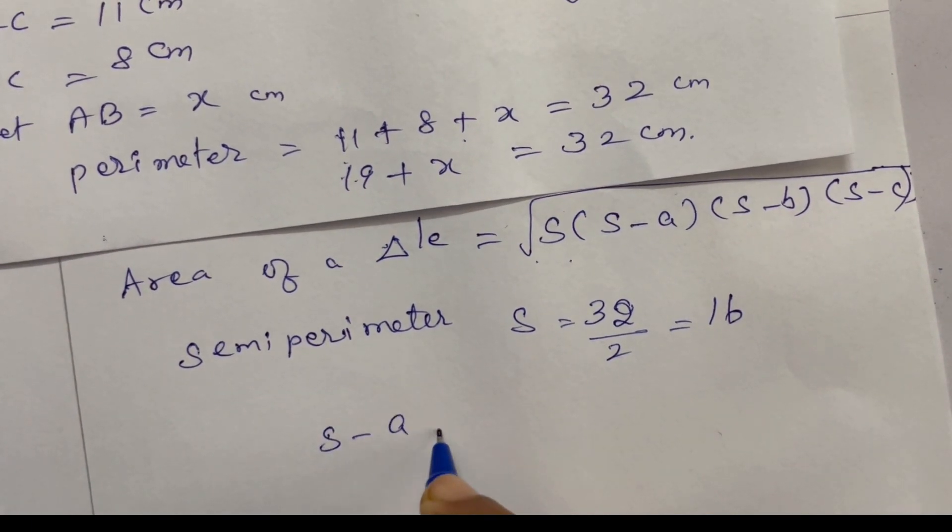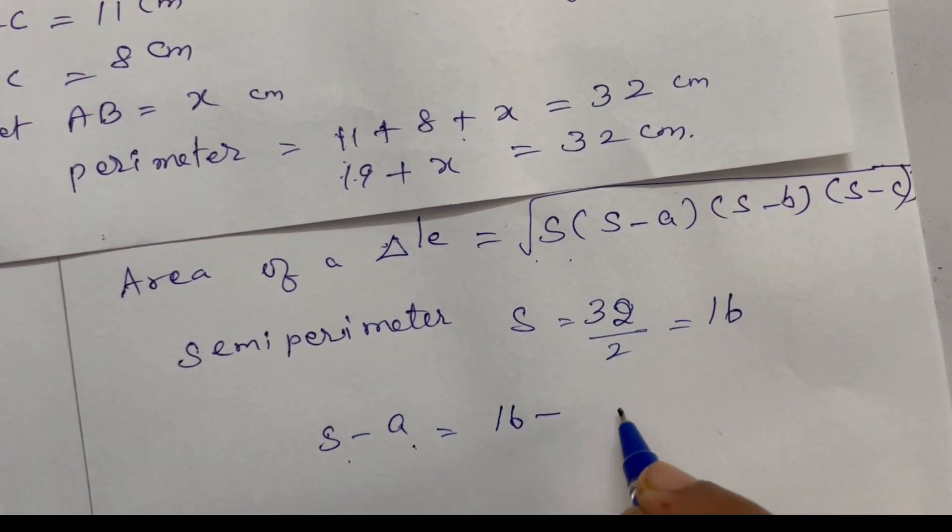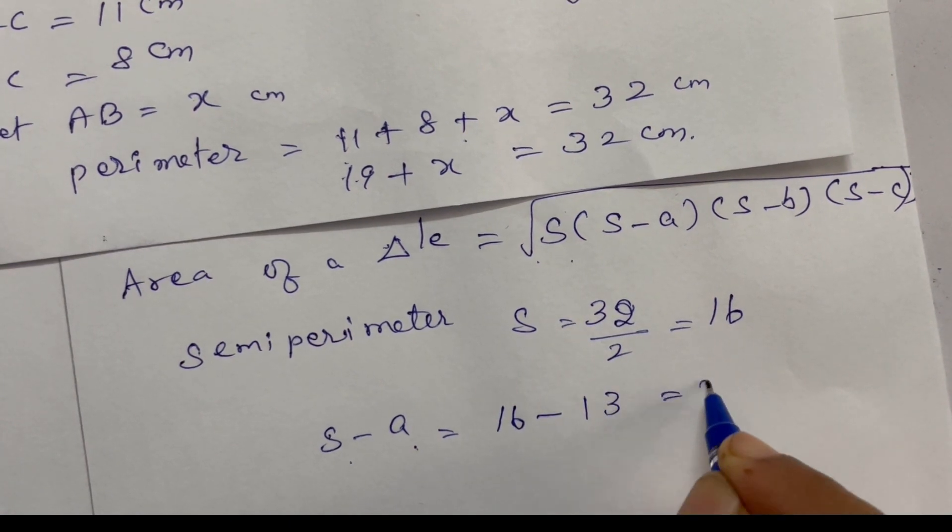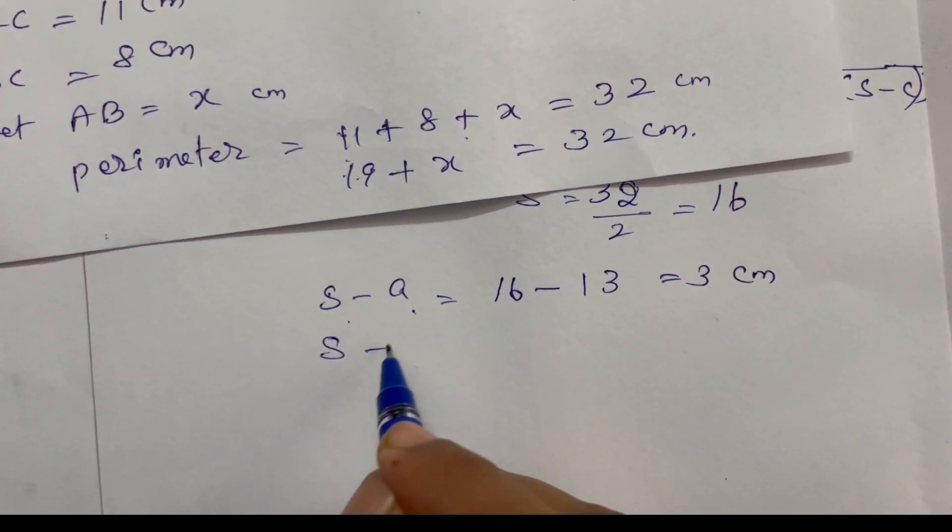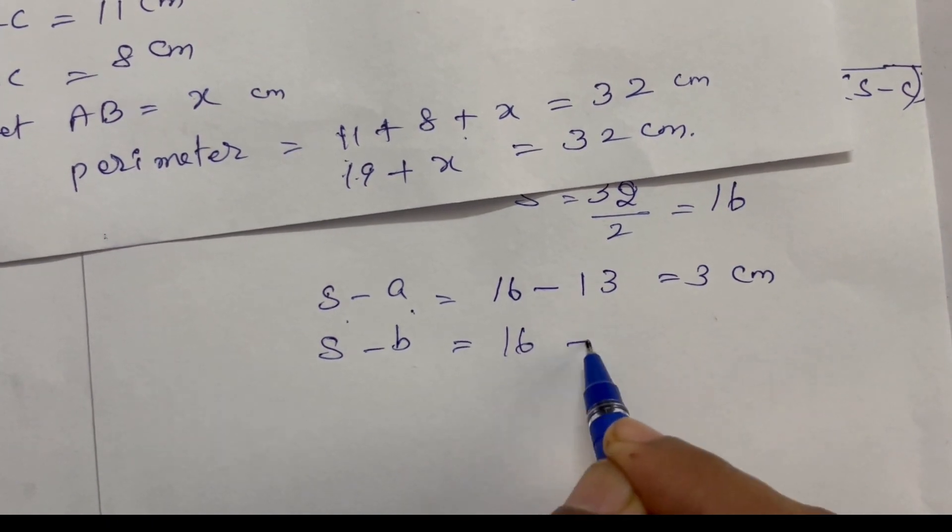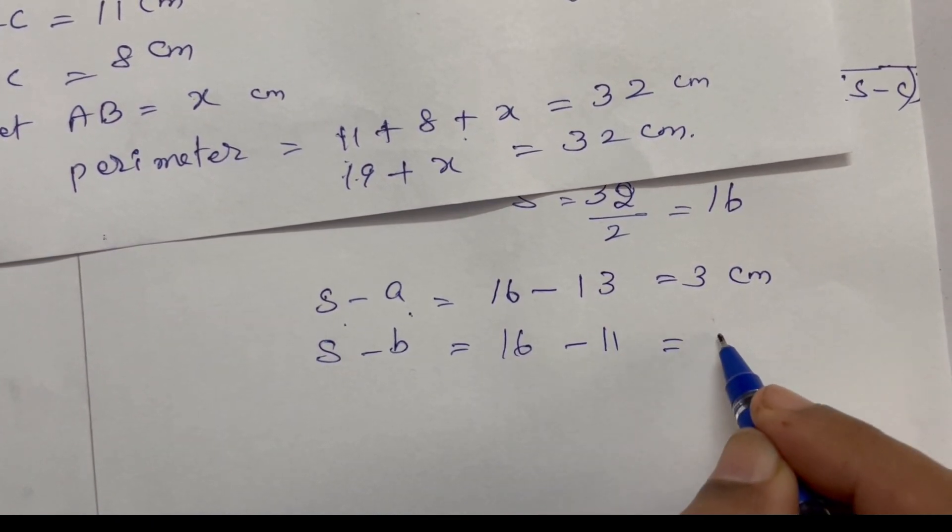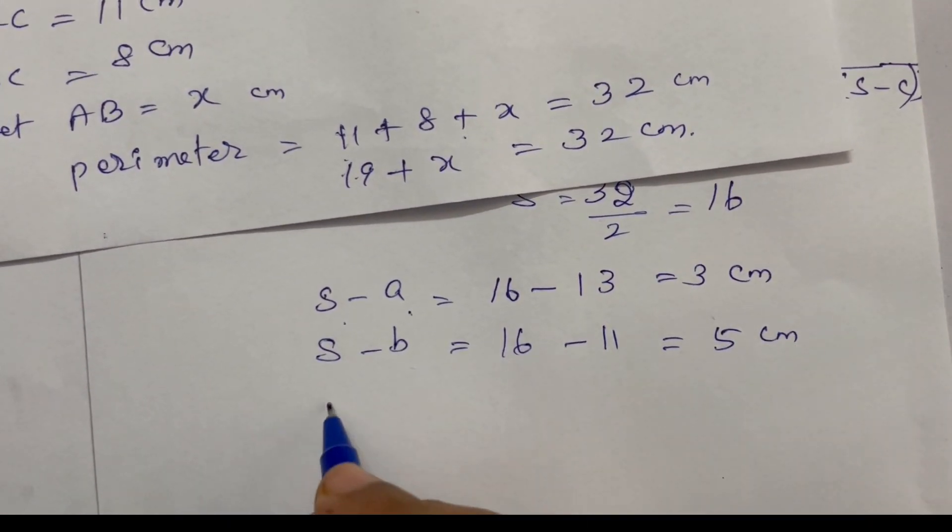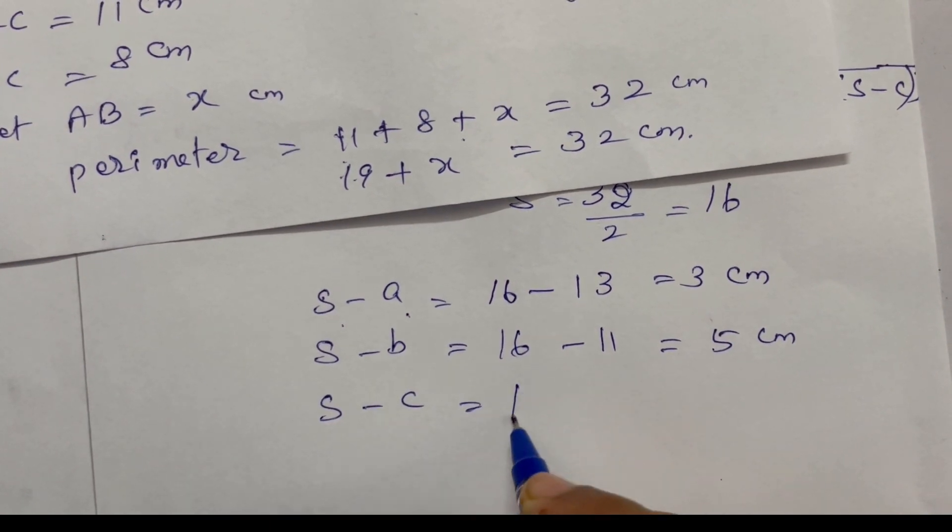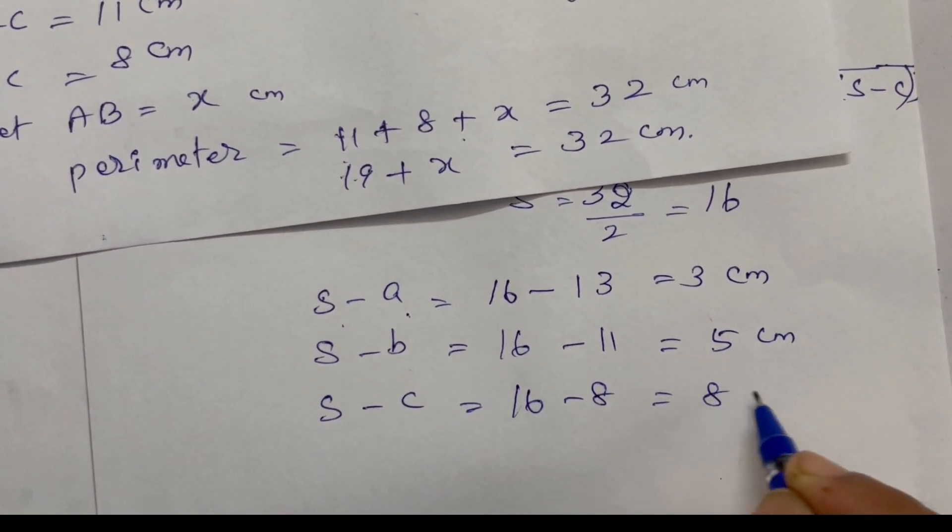s minus a: 16 minus 13 equal to 3 cm. s minus b: 16 minus 11 equal to 5 cm. s minus c: 16 minus 8 equal to 8 cm.